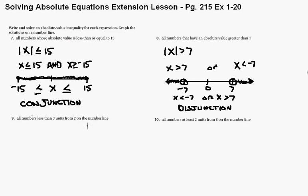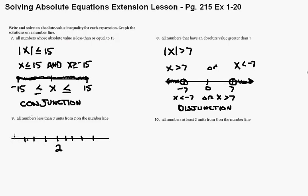9 and 10 are a little trickier, but I think we can get this. We're going to actually start with the number line on these — that will help us to decipher what this inequality is. So it says all numbers less than 3 units from 2. So 2 is kind of our focus, and we're going to write 2 there. Let's go 4 units out in both directions. All numbers less than 3 units from 2, so if I go 3 units out in both directions from 2.